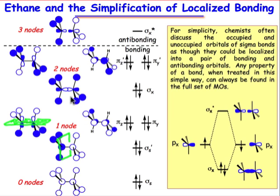Next above that, we're still using the carbon 2p orbitals, but now the 2px orbitals combine constructively. Because they're on their sides, there are going to be two nodal planes introduced. So we have an energy that's higher than the one-node cases below.